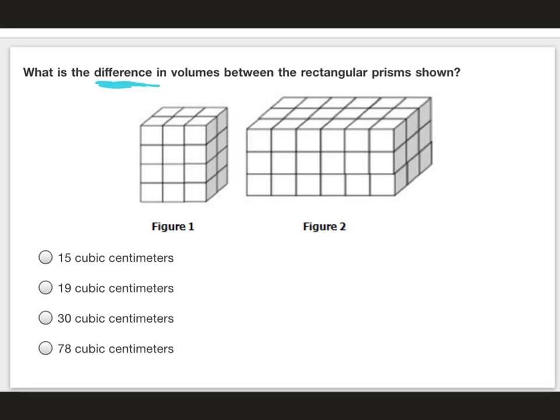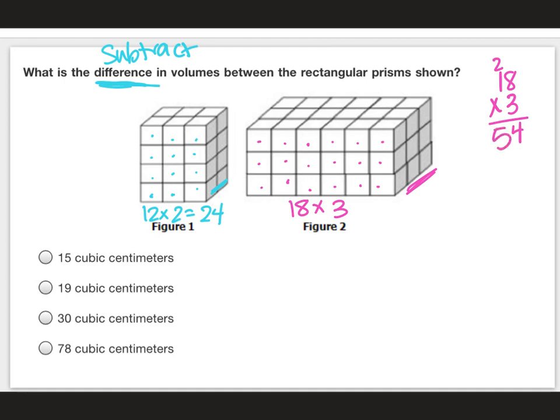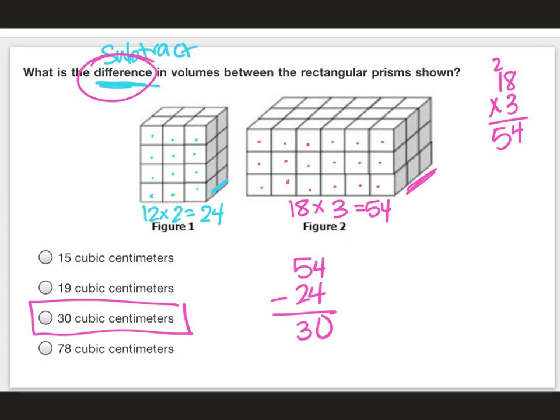This one's asking for what is the difference, and we know that difference means subtract. So we're going to find the volumes of these two and figure out the difference by subtracting. First I'm going to find the volume of figure 1: one, two, three, four, five, six, seven, eight, nine, ten, eleven, twelve, and it goes back two. So this figure is 12 times 2, so it is 24. On the next one, I have one, two, three, four, five, six, seven, eight, nine, ten, eleven, twelve, thirteen, fourteen, fifteen, sixteen, seventeen, eighteen, and it goes back three. So this one is 18 times 3. Three times eight is 24, three times one is three, plus two is five. So that is 54. We said we got to find the difference. So 54 minus 24, and that's going to leave us with 30. So our difference between the two is 30 cubic centimeters.